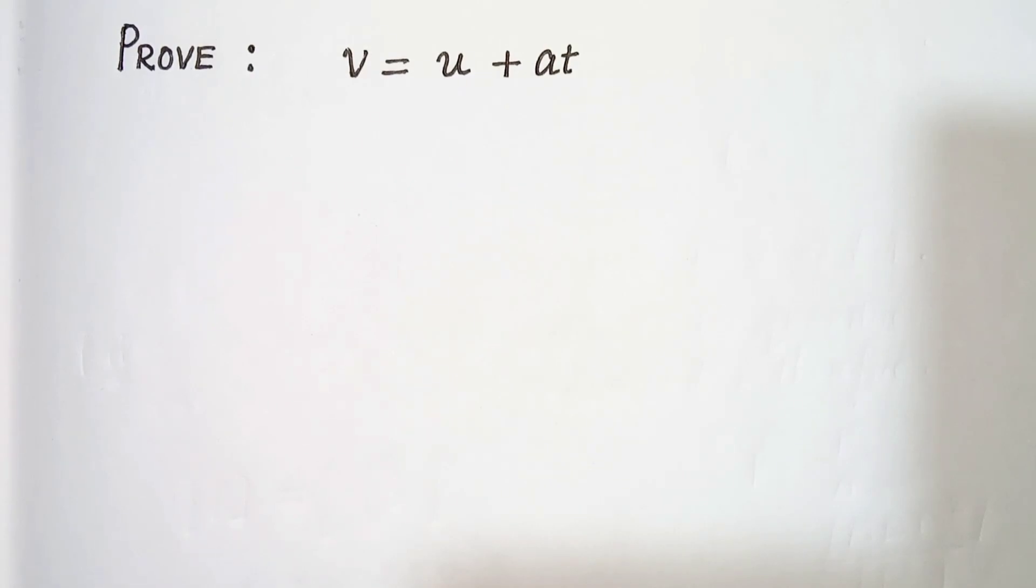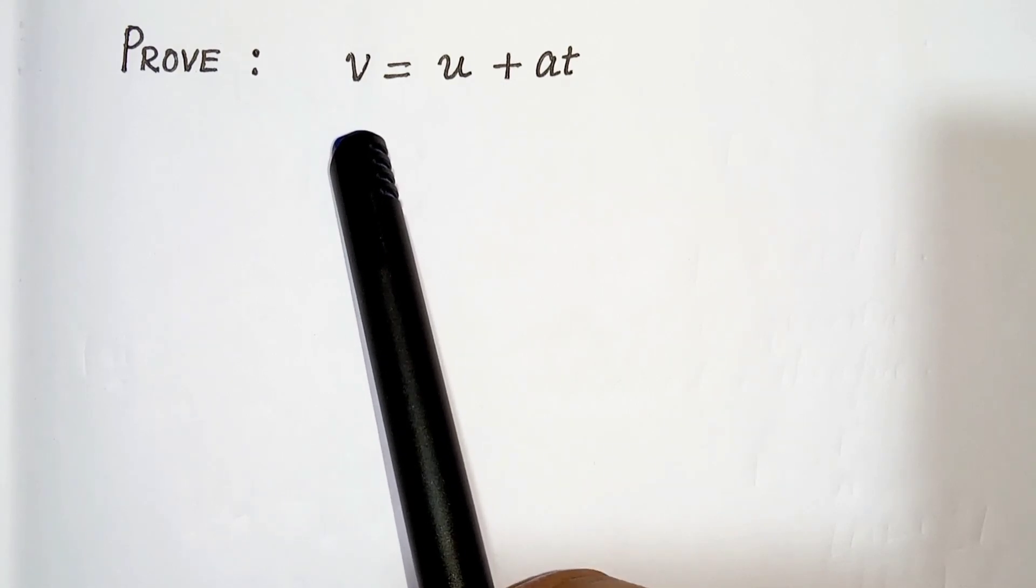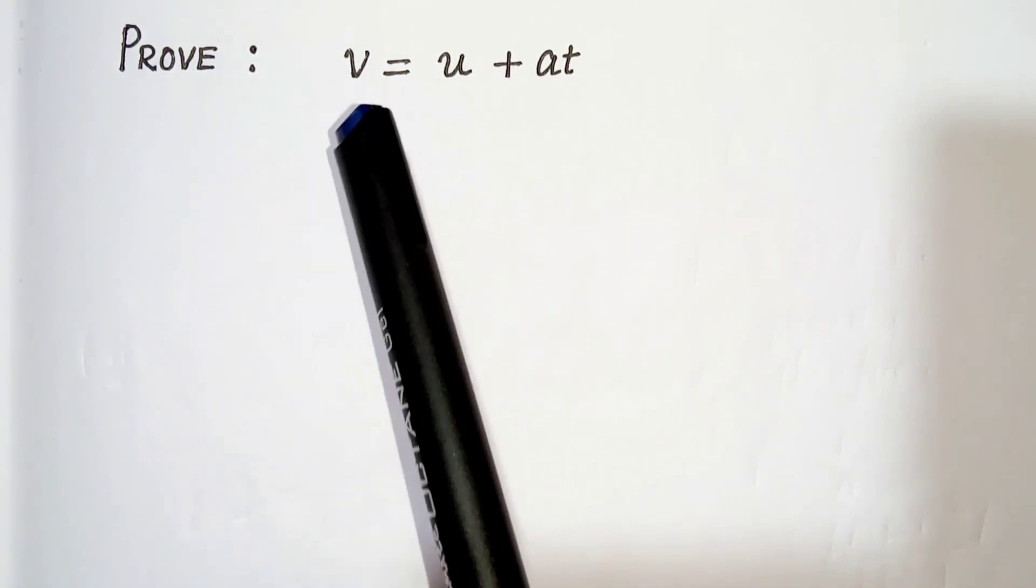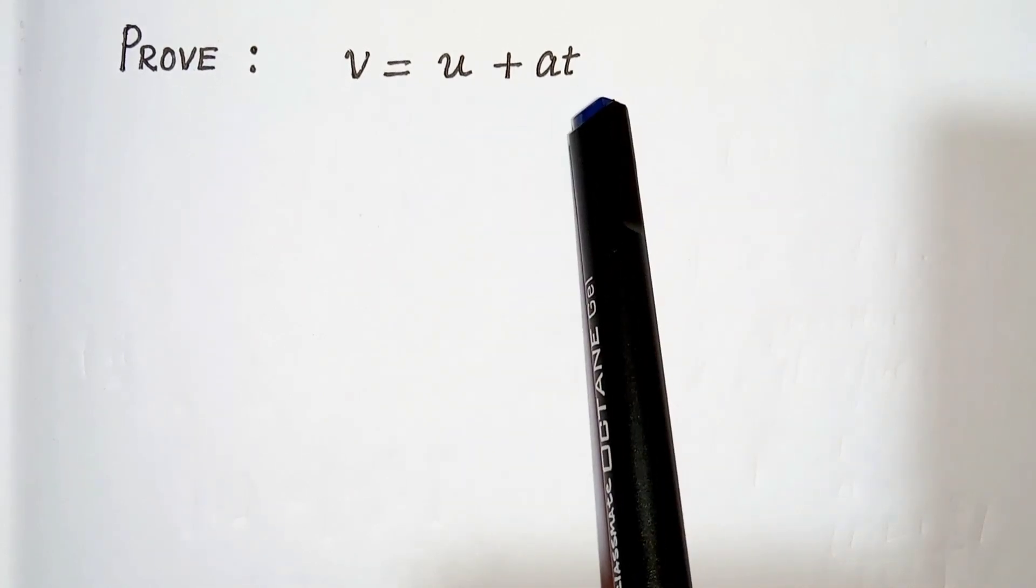Hello everyone, in this video we will do some high school physics. This is one of the equations of motion for an object moving with constant acceleration, which says v equals u plus at.